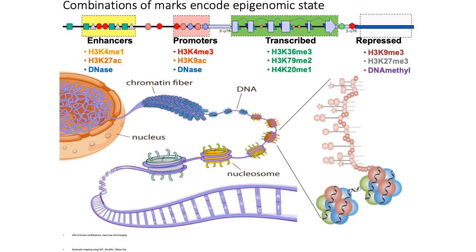This slide gives a brief summary of some of the better characterized epigenetic marks and what elements they tend to be associated with. Some marks not yet discussed include those associated with active transcription, like K36 trimethylation, K79 dimethylation, and K20 monomethylation. Accessible chromatin is generally associated with enhancers, promoters, or active transcription, and assays for measuring chromatin accessibility will be discussed in a few slides.